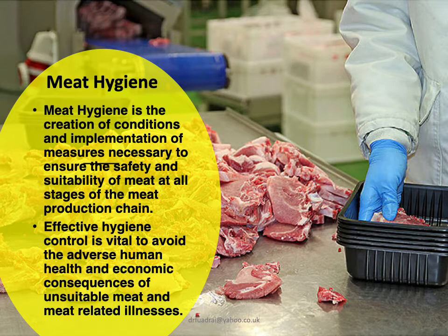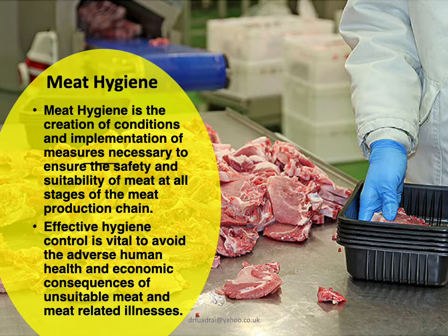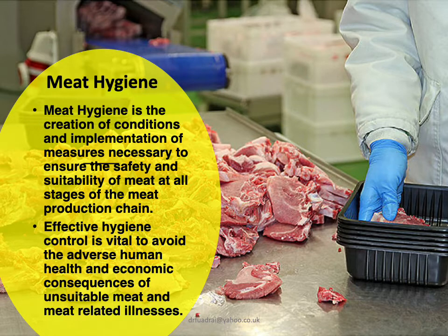As far as meat hygiene is concerned, the term meat includes various tissues of animal origin. Meat hygiene is the creation of conditions and implementation of measures necessary to ensure the safety and stability of meat at all stages of the meat production chain. Effective hygiene control is vital to avoid the adverse human health and economic consequences of unsuitable meat and meat-related illnesses.